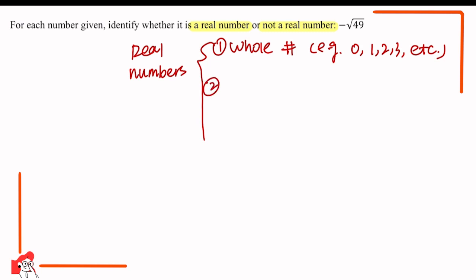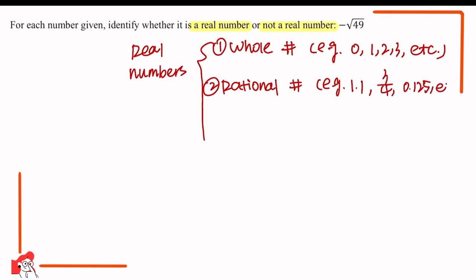The second classification of real numbers is rational numbers — for example, 1.1, three over four, and 0.125. These numbers are rational numbers and they are also real numbers.